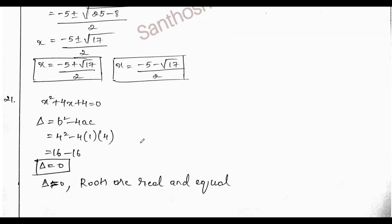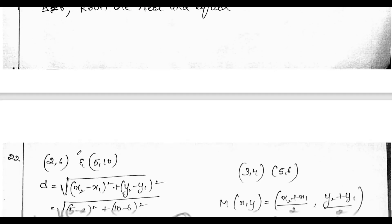Next, finding the discriminant of the quadratic equation and nature of the roots. Discriminant delta equals 0 and the roots are real and equal.